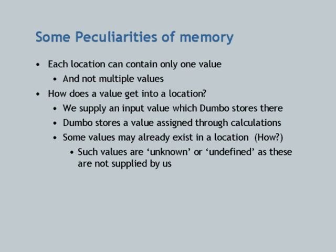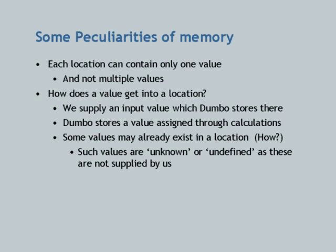How does a value get into a location? There are only two ways: we as users give a value to Dumbo — that is an input operation — or some computations are done and a calculated value is deposited in a designated location. There is no third way. A third possibility exists where Dumbo might find values already present from previous programs — such values are called unknown or undefined values because they are not supplied by us.